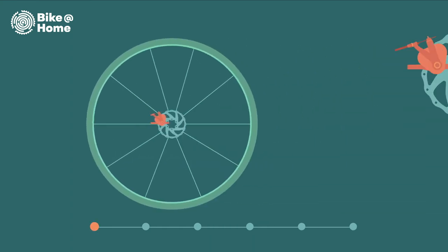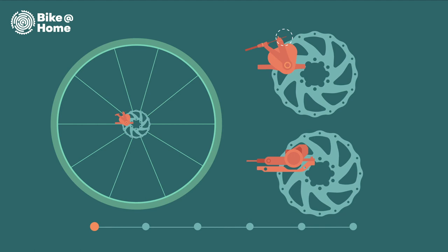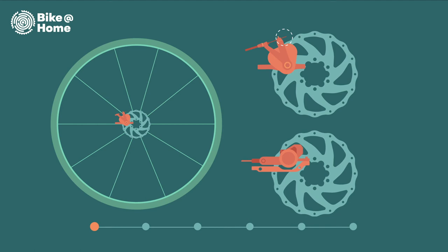You can recognize a mechanical disc brake by a piece of brake cable. A hydraulic disc brake does not have this cable piece.